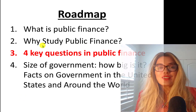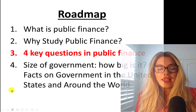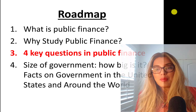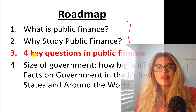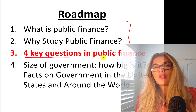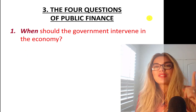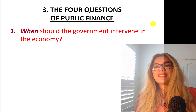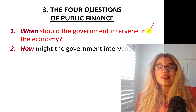Here's our roadmap. We talked about this before. In Part 1, we covered these two items. And now we are covering four key questions in public finance. Question number one: when should the government intervene in the economy? In this part, we are covering this.